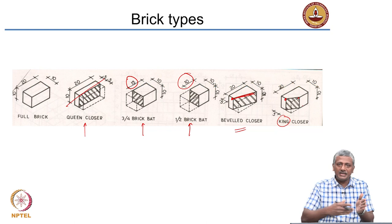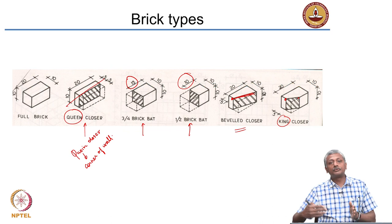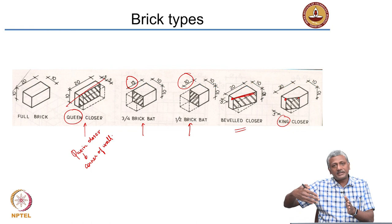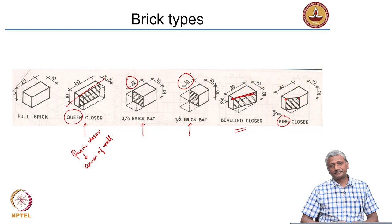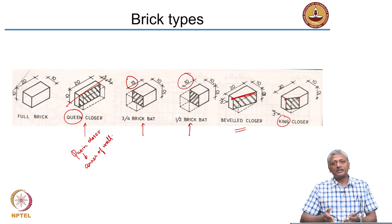The queen closer is also called the coin closer — a coin being the corner of a wall. For a wall to end and turn in another direction, you need to provide these bricks in an arrangement that closes the corner, which is why it is called a coin closer or colloquially a queen closer. These special bricks can be molded or shaped by the mason on site using a trowel.